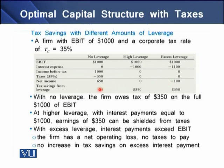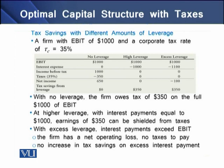When we look at tax savings from leverage: there is no tax saving in the case of no leverage, and a full tax saving of three hundred and fifty dollars in the high leverage case. There is no tax saving in the excessive leverage case, where there is extra interest of one hundred dollars with no profit to shield. In the no-leverage case the firm owes three hundred and fifty dollars in tax on the full EBIT. At the high leverage level, with interest equal to one thousand dollars, the full three hundred and fifty dollars can be shielded from taxes. With excessive leverage, interest payments go beyond EBIT, resulting in a net operating loss of one hundred dollars — meaning no tax to pay and no increase in tax savings from the excessive interest payments.